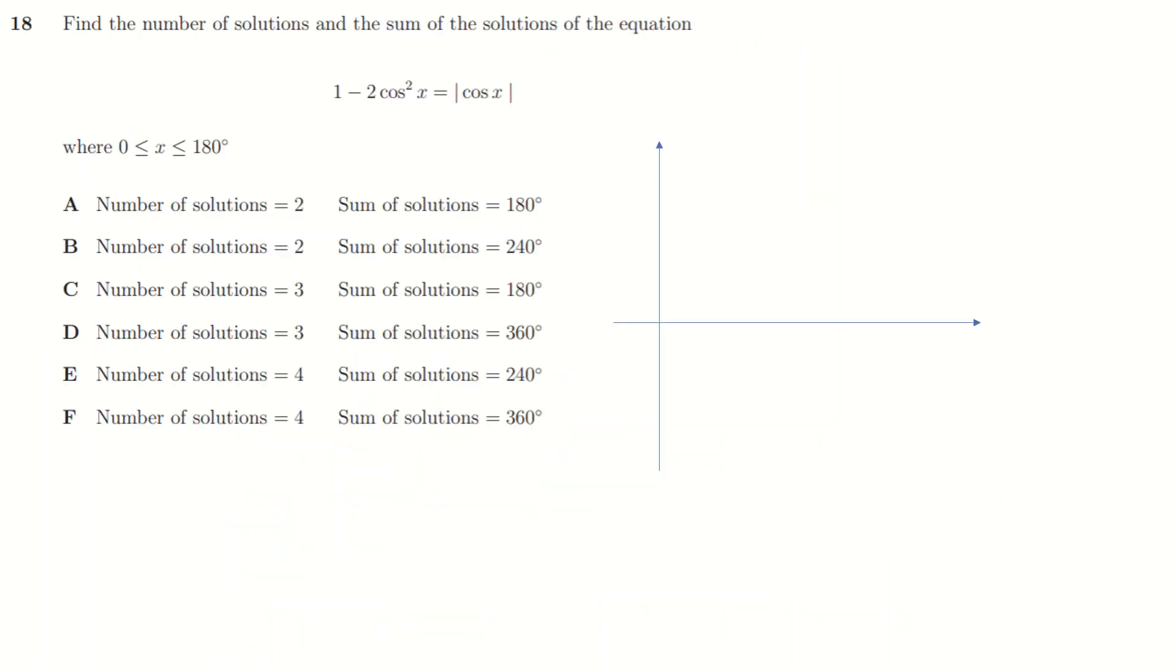One more. This one is slightly different because it does ask for the number of solutions but then it also asks for something about them—the sum of the solutions. I'm going to ignore this bit first and just focus on: if I knew how many number of solutions it had, I would narrow it down to one of these three pairs of options. So how do I find the number of solutions? Of course I sketch the graph. I've already got the axes right here. Let's sketch the graph between 0 and 180 because that's the boundary we're interested in.